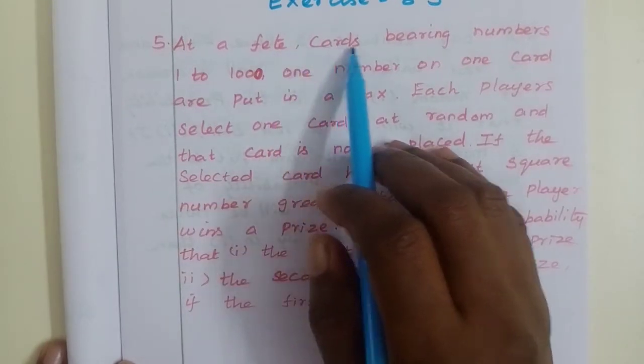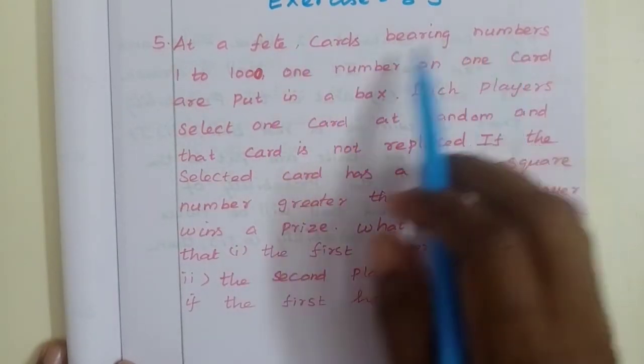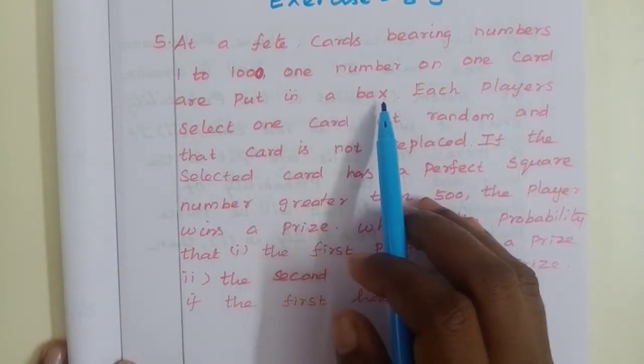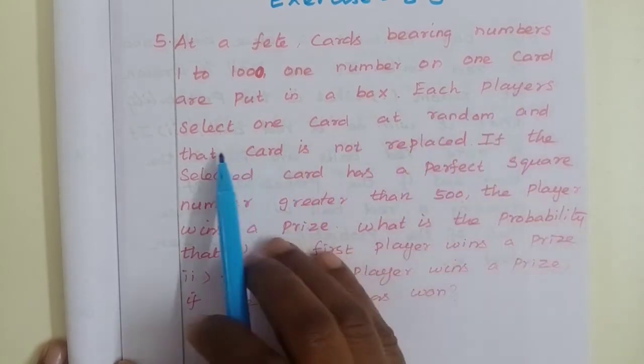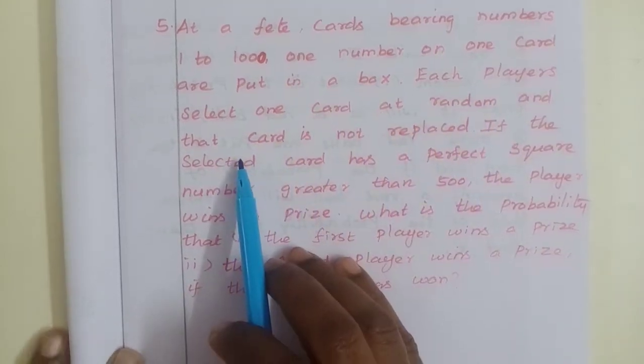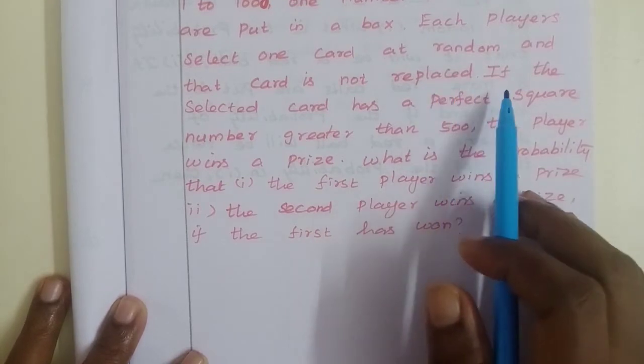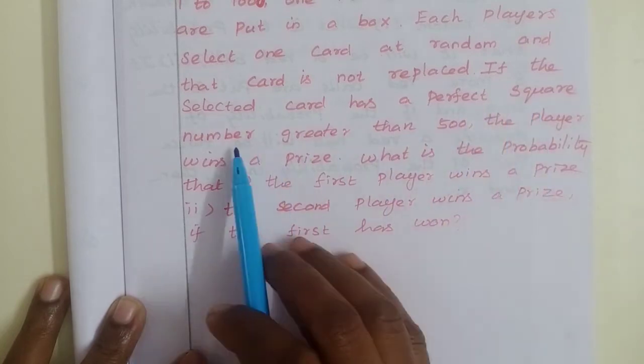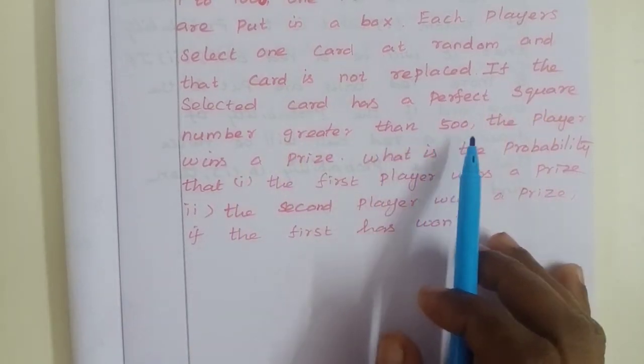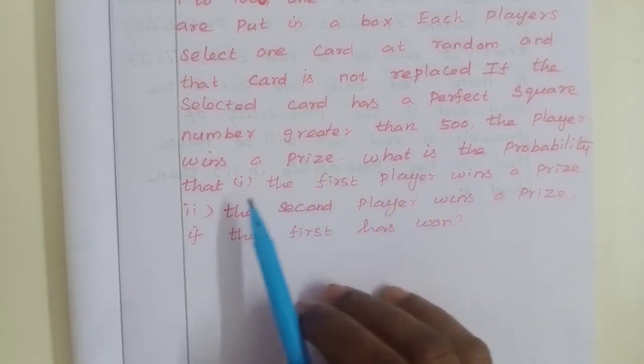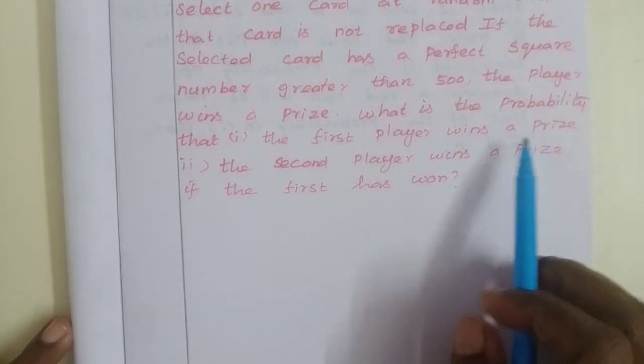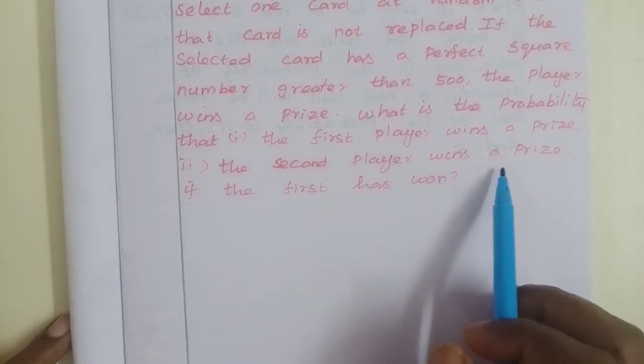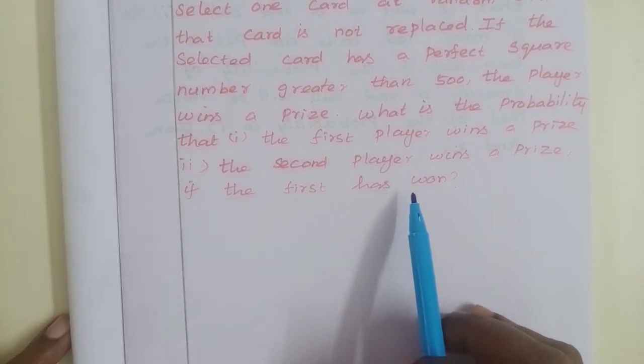At a feat, chords bearing numbers 1 to 1000, one number on one chord, are put in a box. Each player selects one chord at random and that chord is not replaced. If the selected chord has a perfect square number greater than 500, the player wins a prize. What is the probability that the first player wins a prize? Second, the second player wins a prize if the first has won.